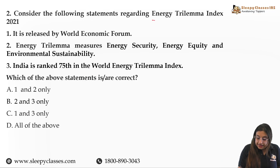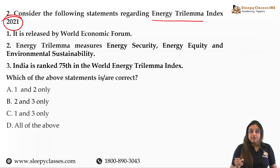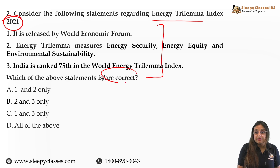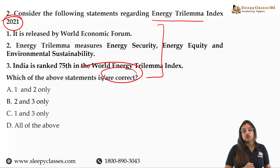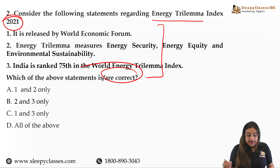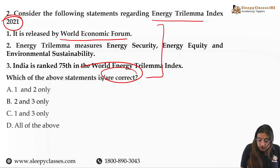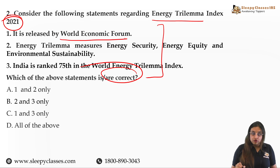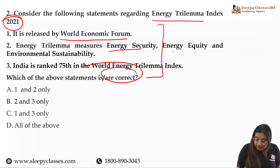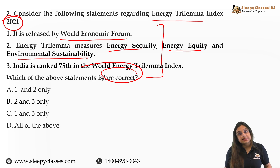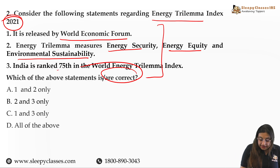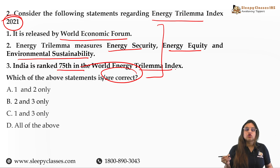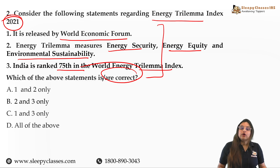The next question is regarding the Energy Trilemma Index of 2021. This question has three statements and asks which ones are correct. The first statement says it is released by the World Economic Forum. The second says it measures energy security, energy equity and environmental sustainability. The third states India is ranked 75th in the World Energy Trilemma Index of 2021.